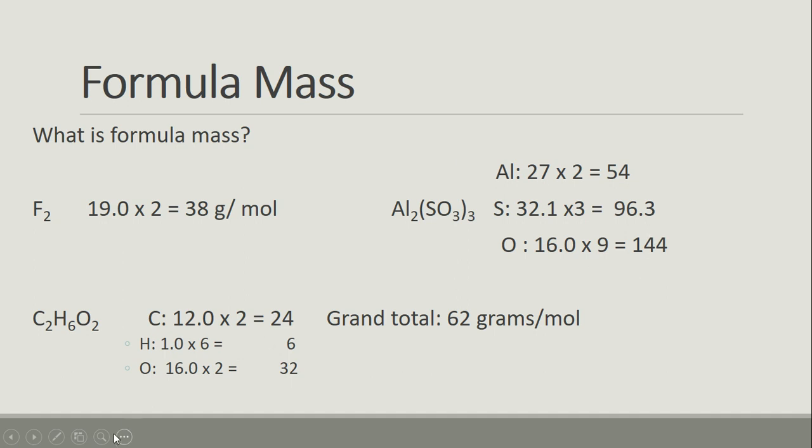So this three here actually distributes to both the sulfur and the oxygen. So that's how come that is a three for the sulfur, and it's a nine for the oxygen because three times three is nine. So we add all those up and we get a grand total of 54 plus 96.3 plus 144 is 294.3. So that should be pretty clear at this point how we do formula mass.